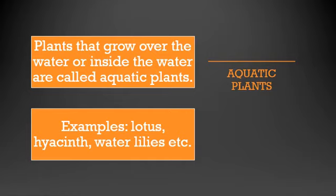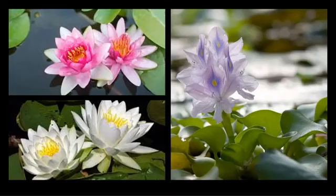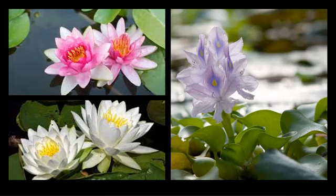Lotus — you all have seen lotus. I'll show you the example. The first picture is the lotus. The second picture, which looks like lotus, is called water lilies. The third picture is hyacinth — H-Y-A-C-I-N-T-H. These are the three examples of plants which live in or inside the water. As you can see in the picture, they are floating on the water and the flower is grown above the water — so they are called aquatic plants.